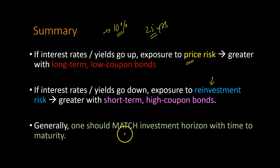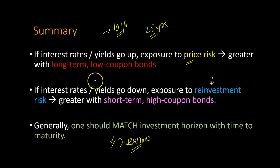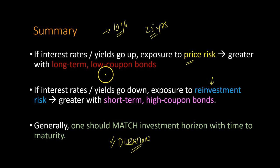Now, as it turns out, technically speaking, this statement is not exactly correct. In fact, there's a concept in bond valuation called duration — the duration of a bond. And technically, one should match the investment horizon with the duration of a bond, to which you might say, well, what is duration? Well, that is for a separate video. It turns out that the whole concept of duration is motivated by these notions of price risk and reinvestment risk. And that was the objective of this video — to help you understand that there is something called interest rate risk that you face when you invest in bonds. Interest rate risk comprises price risk and reinvestment risk, and both of these depend on two main things: the time to maturity of a bond and the coupon payments that a bond makes.